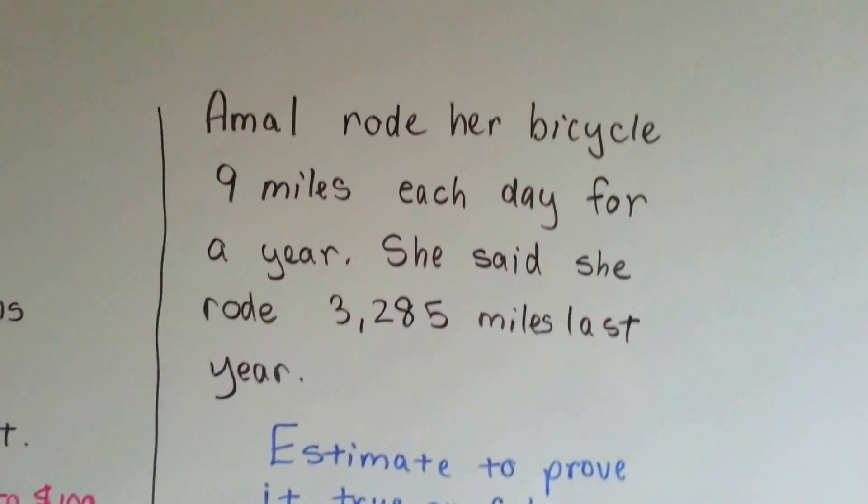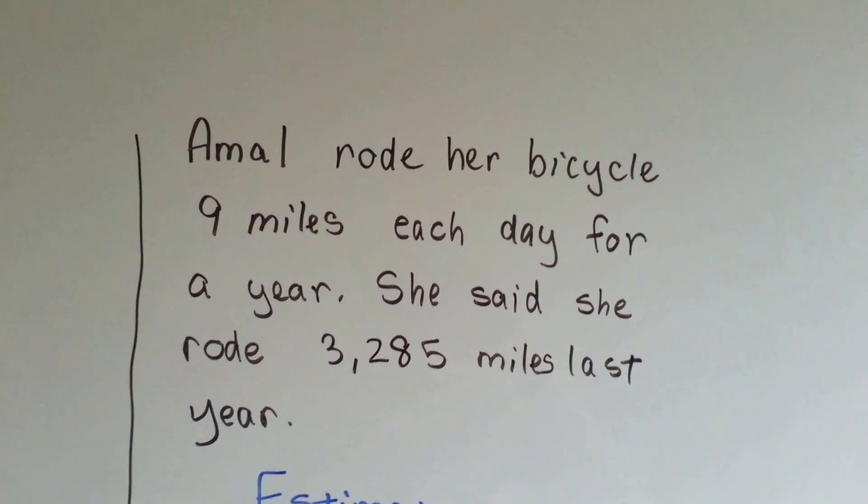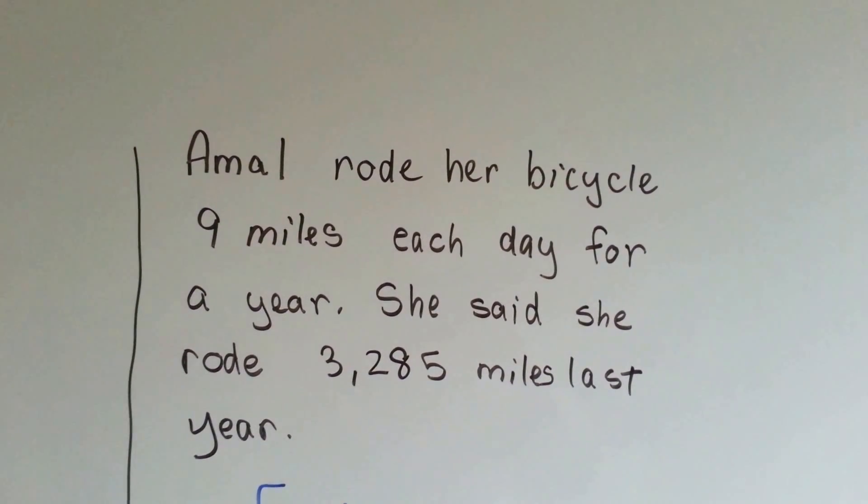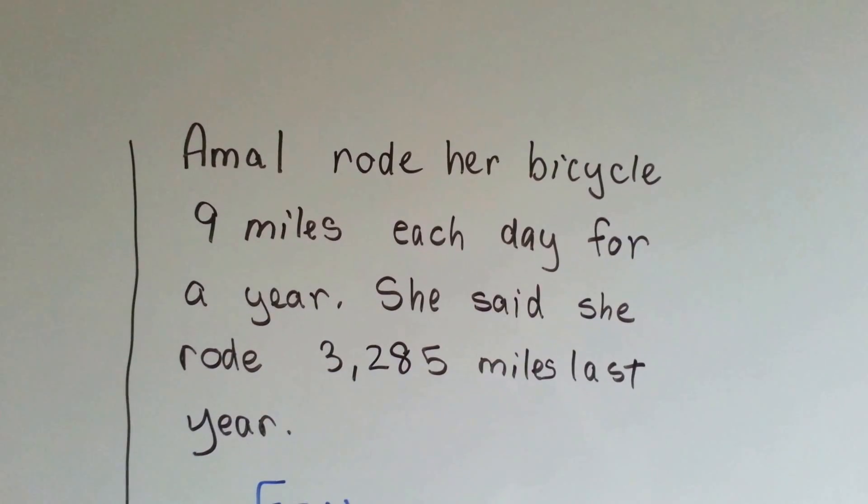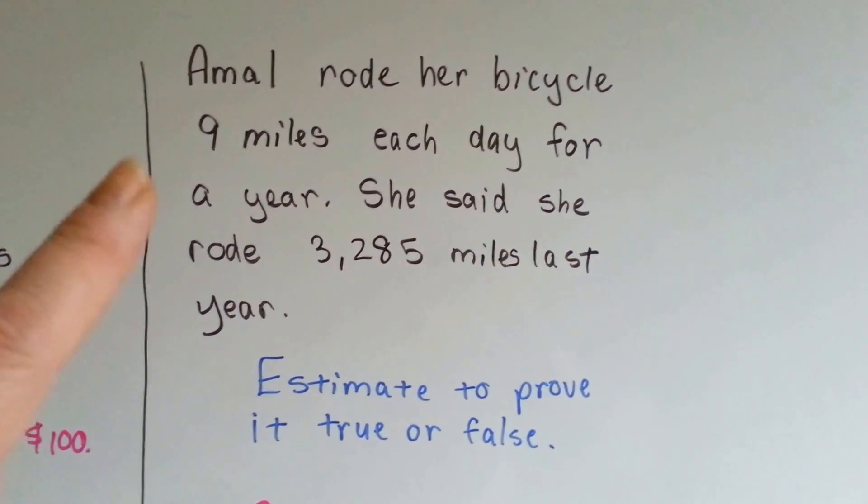Okay. Amal rode her bicycle 9 miles each day for a year. She said she rode 3,285 miles last year. We need to estimate to prove if she's telling the truth or not.